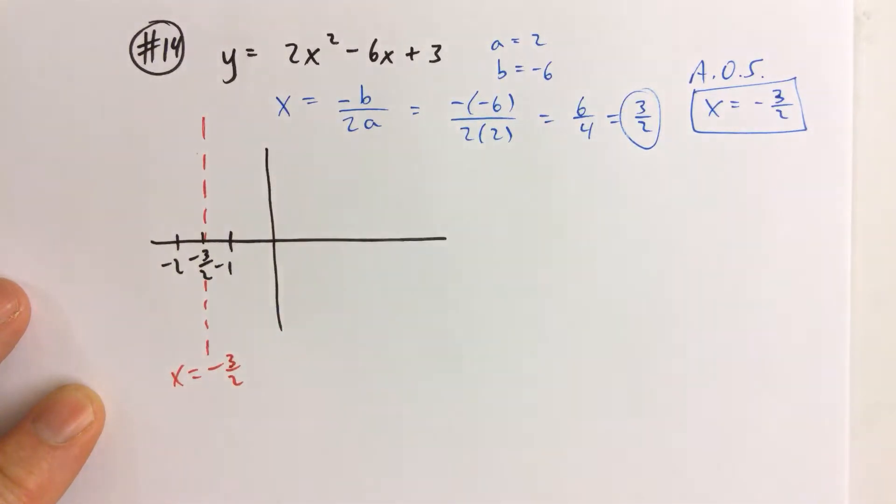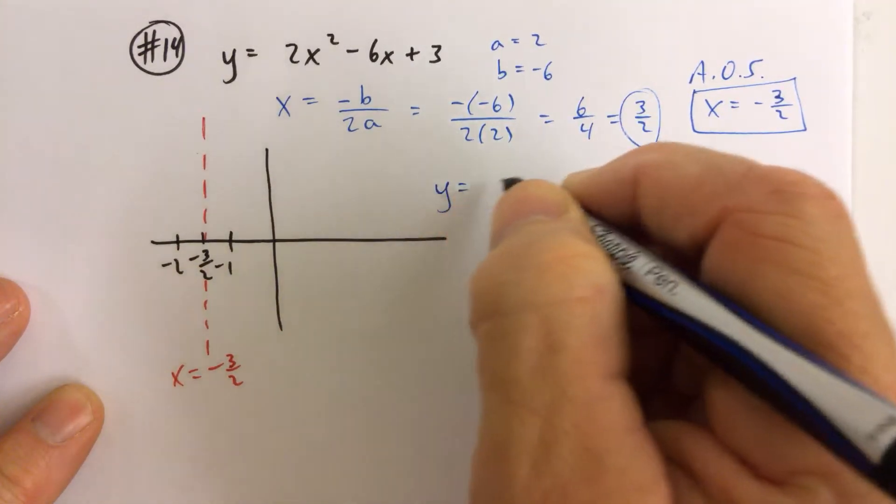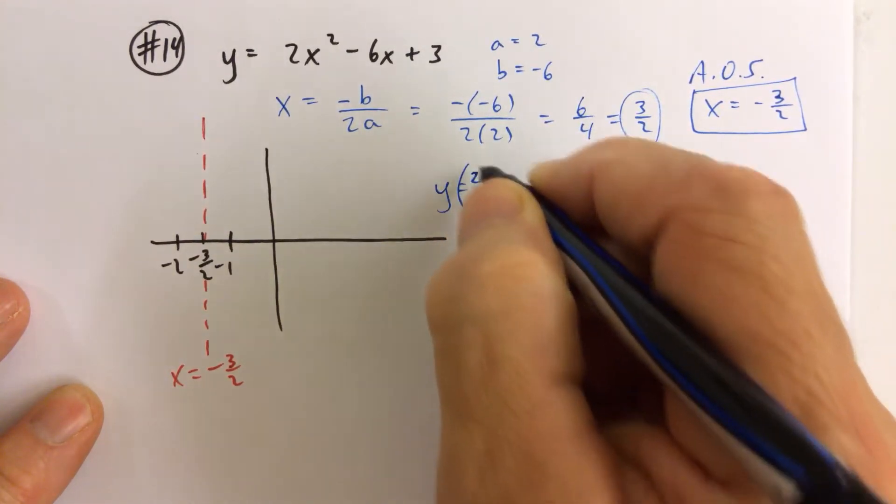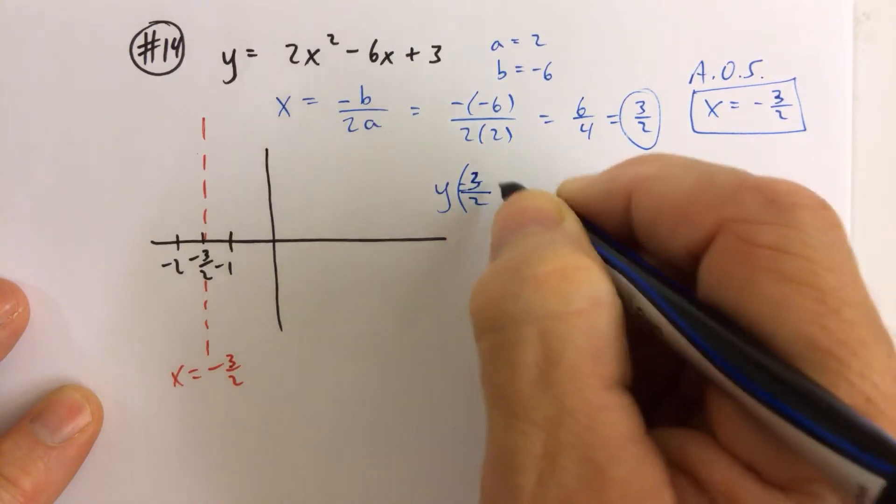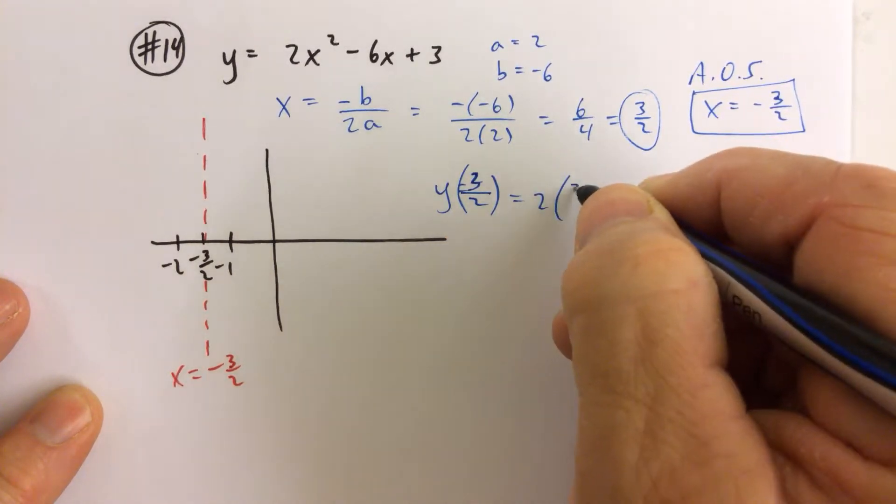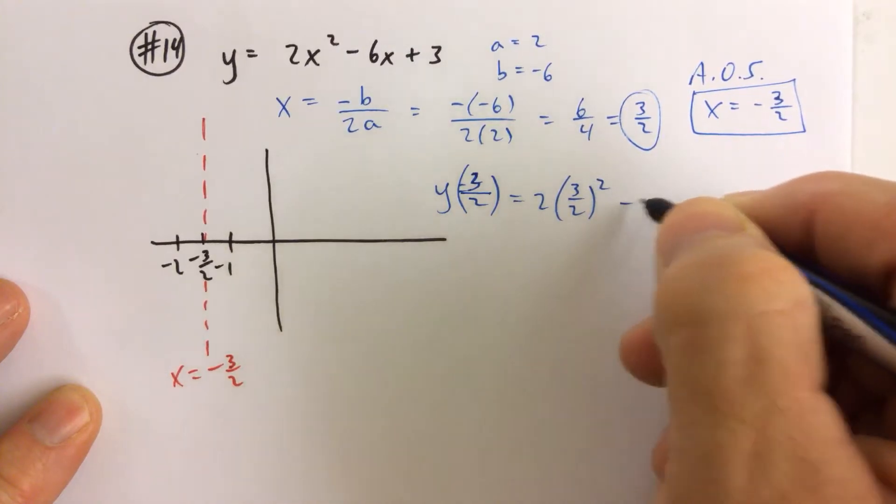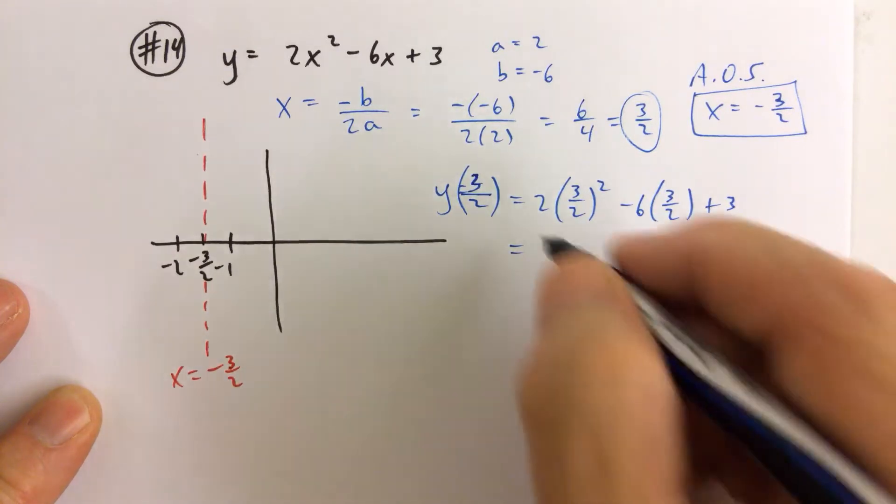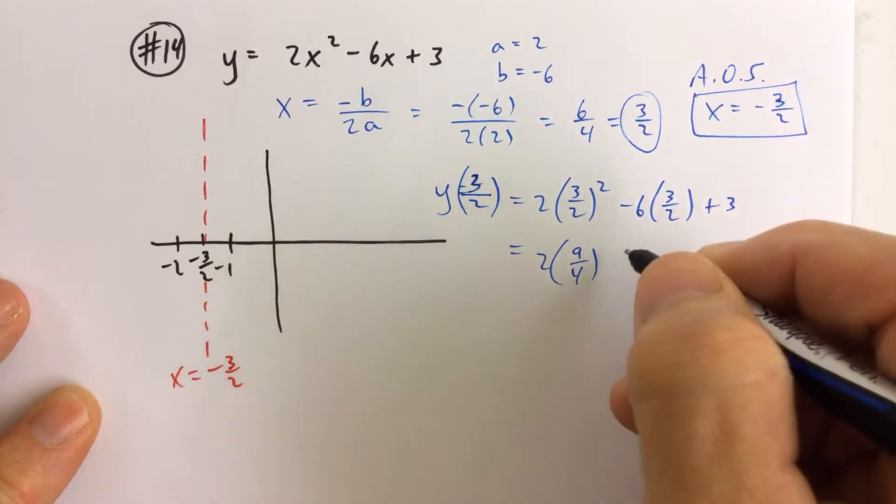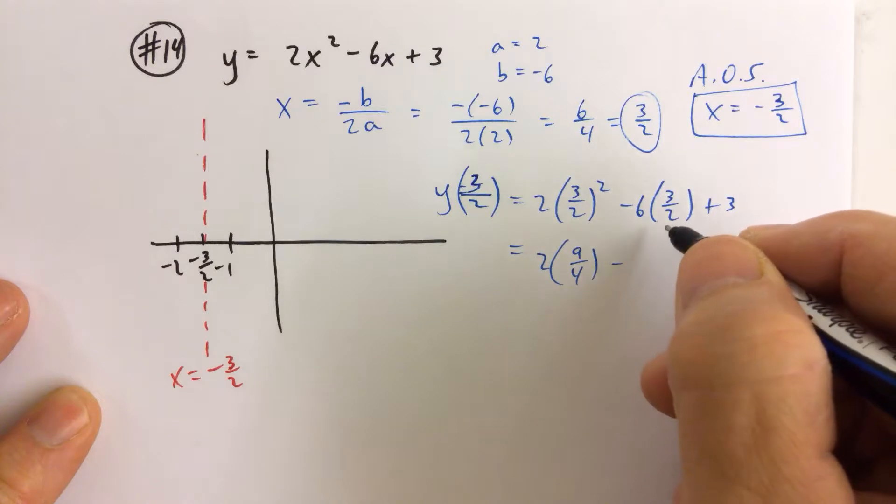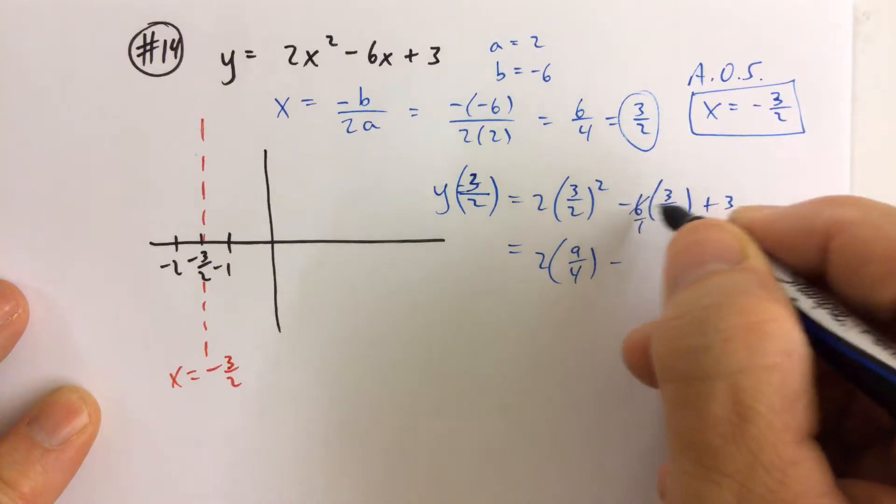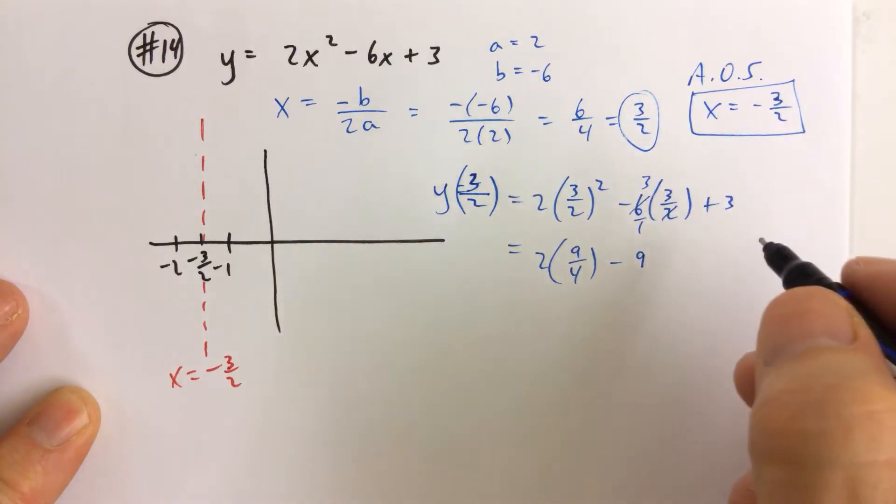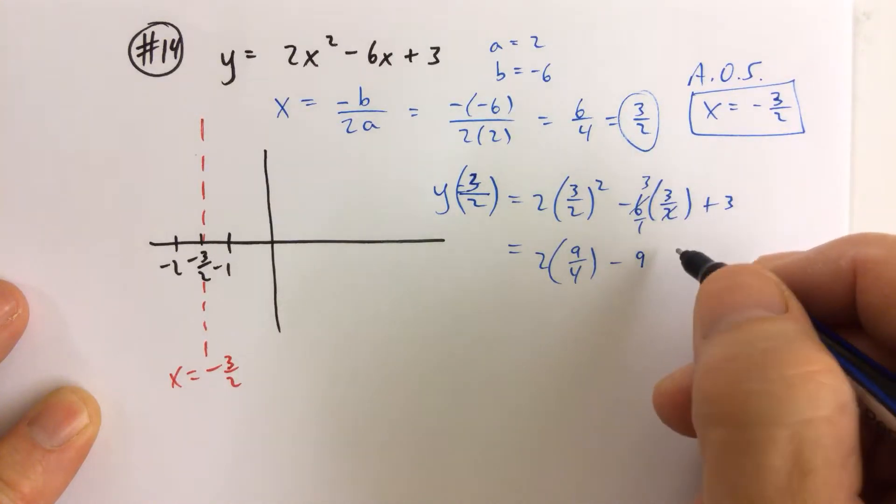How do we find the y-coordinate of the vertex? Well, finding the y-coordinate of the vertex means y of 3 halves means that we're going to replace x with 3 halves. Replacing x with 3 halves, we already have negative feelings towards this because we're going to be figuring out fractions. 6 over 1 times 3 halves. The 2 goes into the 6 3 times, so we get 9. I probably should have kept that as 18 halves because I'm going to have to write it like that anyway.